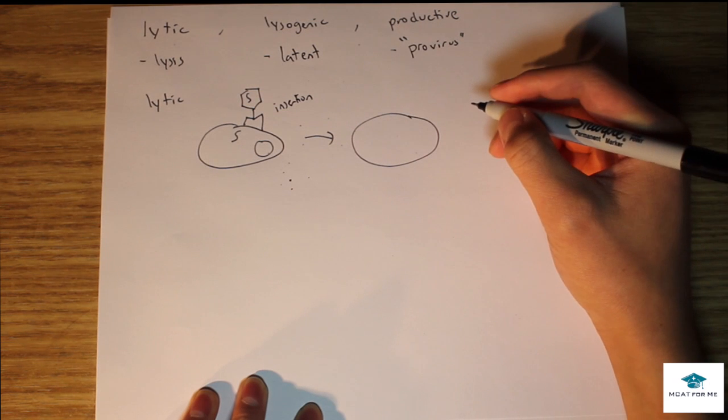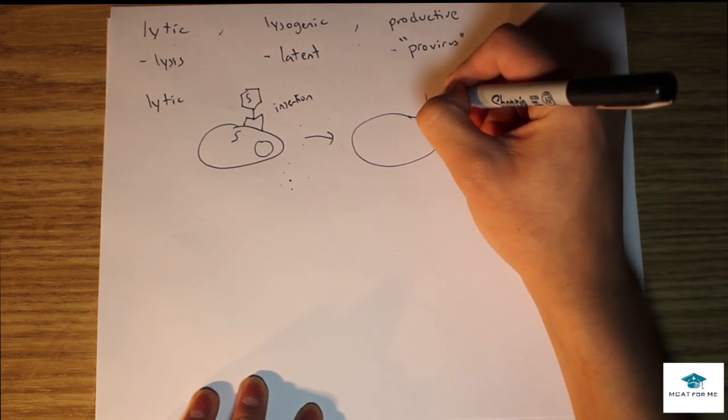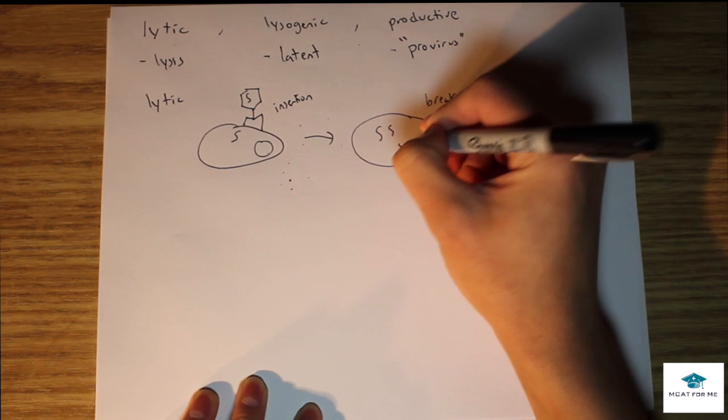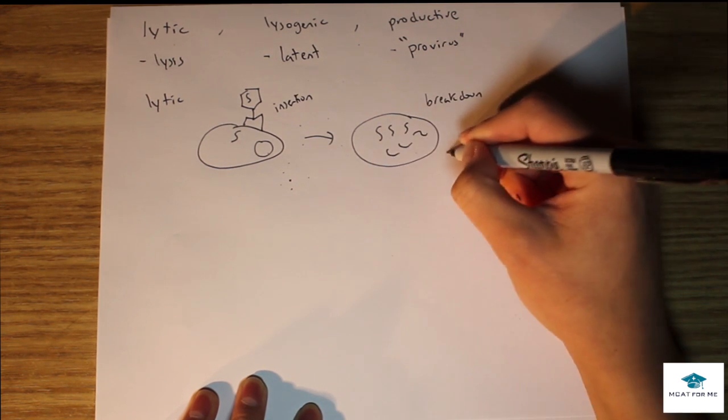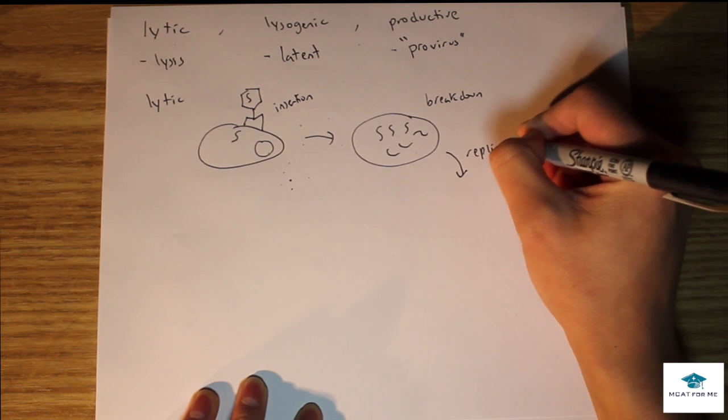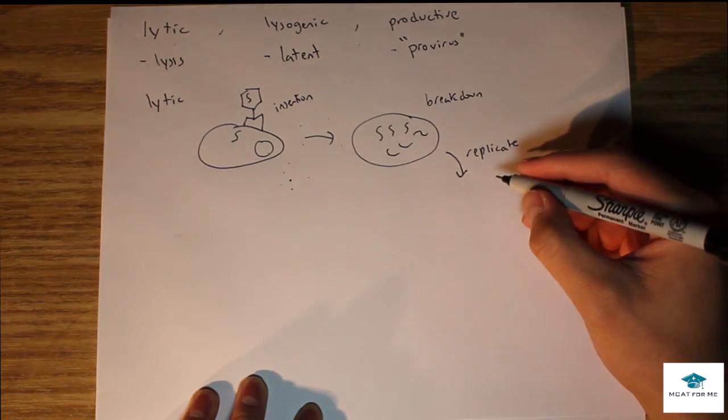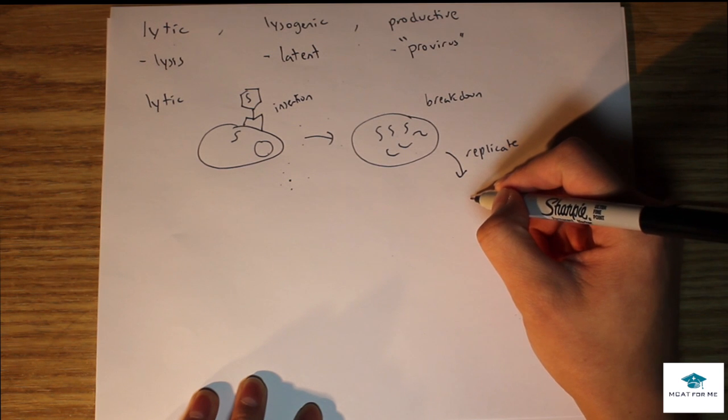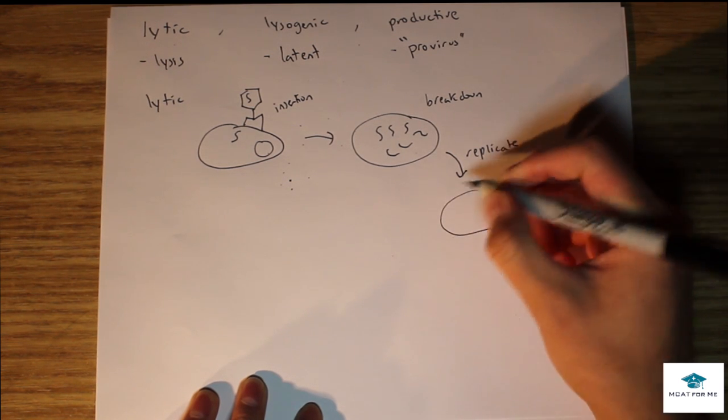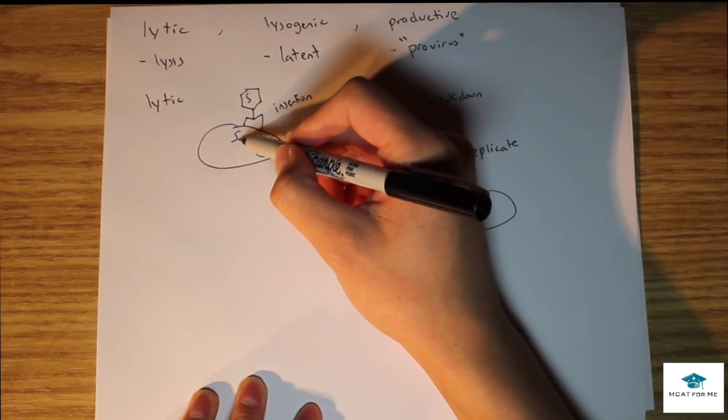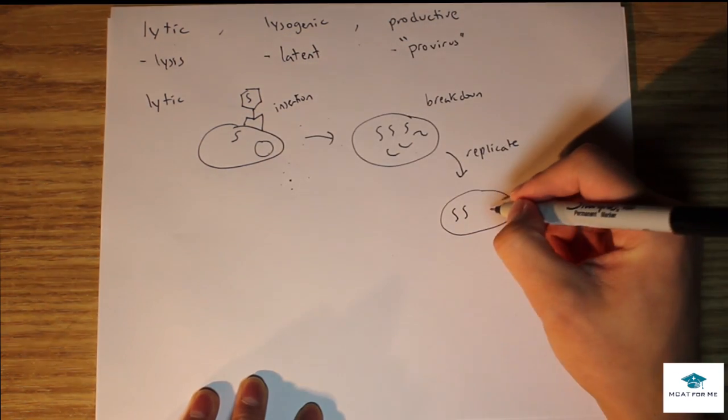The second step would be actual breakdown, so enzymes will break down all the DNA so now we'll just have a bunch of little parts like that. And so now we'll just replicate like normal. We'll replicate as if it was a normal genome, and then now we're gonna do the assembly.